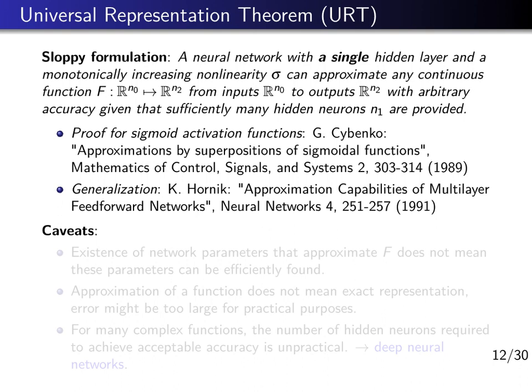Here are two famous papers that introduced the Universal Representation Theorem, and there are many more papers involving universal representation theorems for other kinds of functions or specific neural network architectures — this is still an active area of research in mathematics. This statement seems quite strong because it says you can approximate a very general class of functions arbitrarily well with a very simple multilayer perceptron, which raises the question: why do we even need more complicated or deep neural networks?